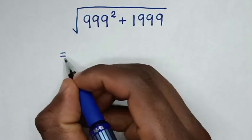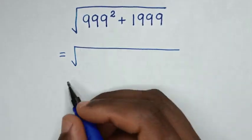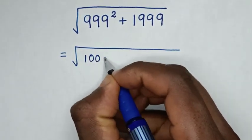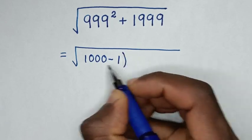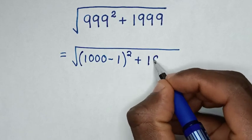It will be equal to square root of 999 is same as 1000 minus 1 bracket square, then plus this 1999.